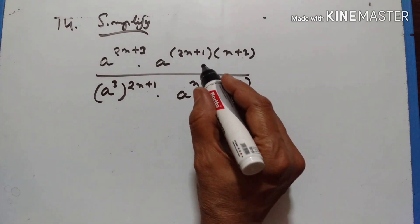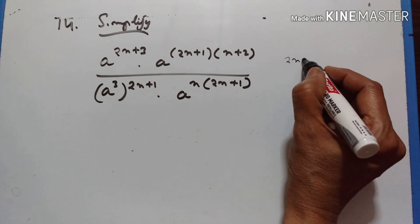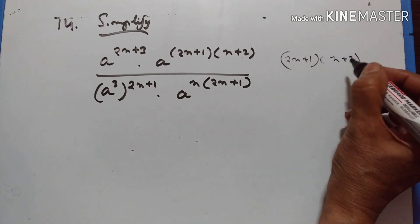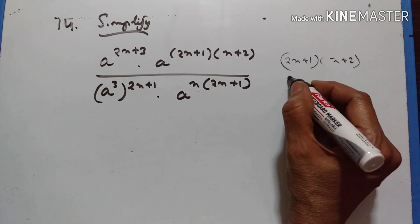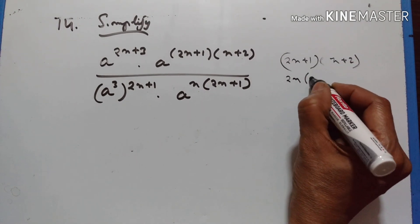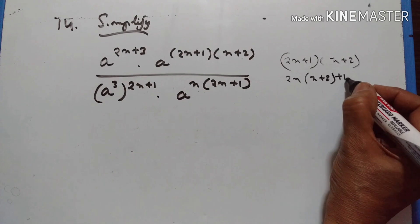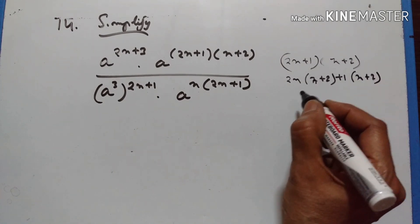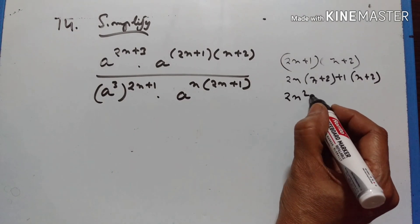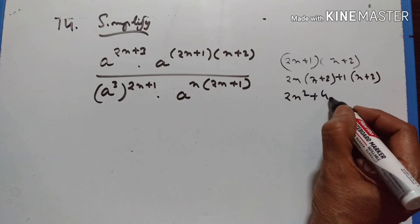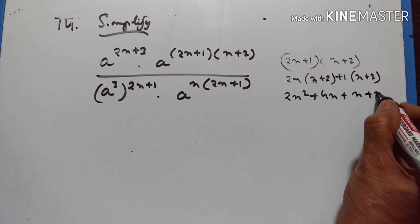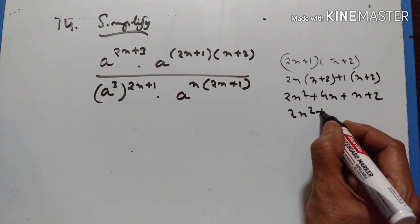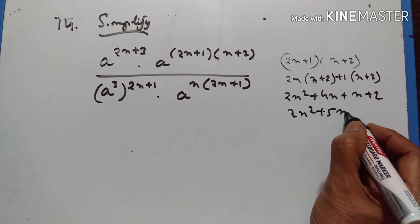Let us solve this first. 2n plus 1 into n plus 2, times 2n into n plus 2, plus 1 into n plus 2, gives 2n squared plus 4n plus 4n plus n plus 2, which equals 2n squared plus 5n plus 2.